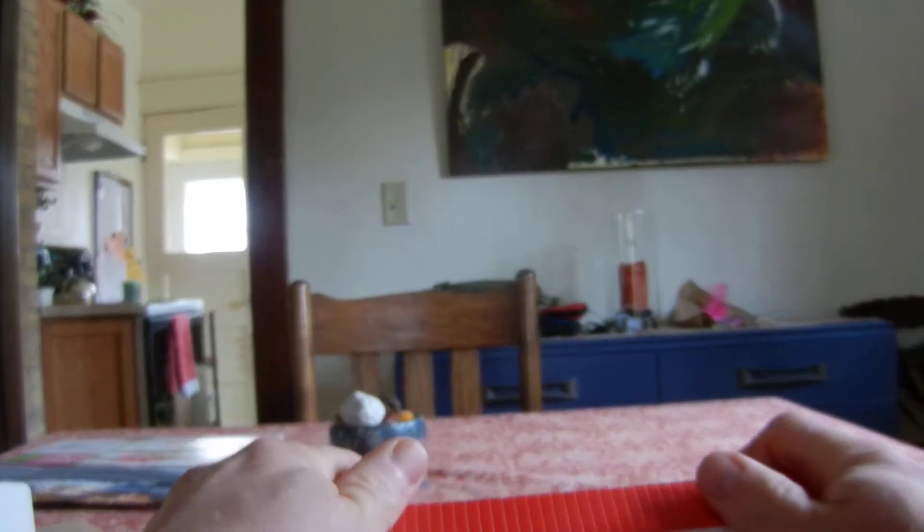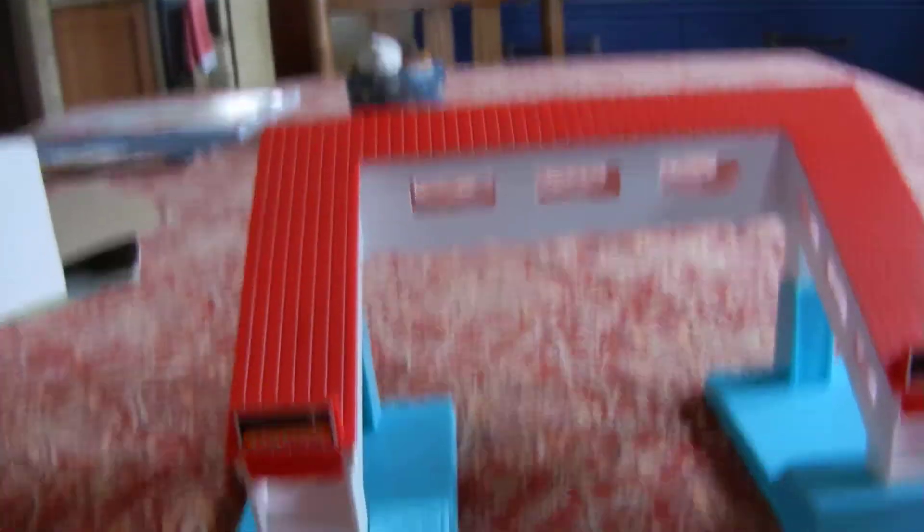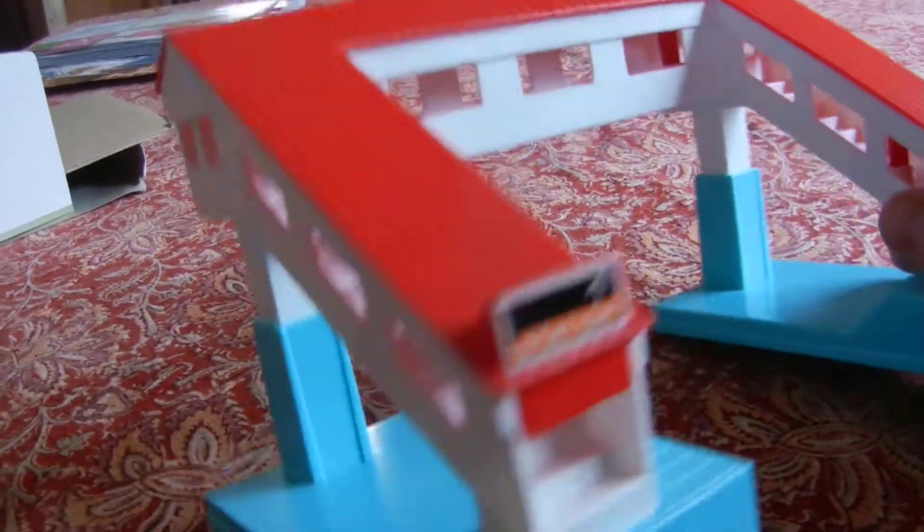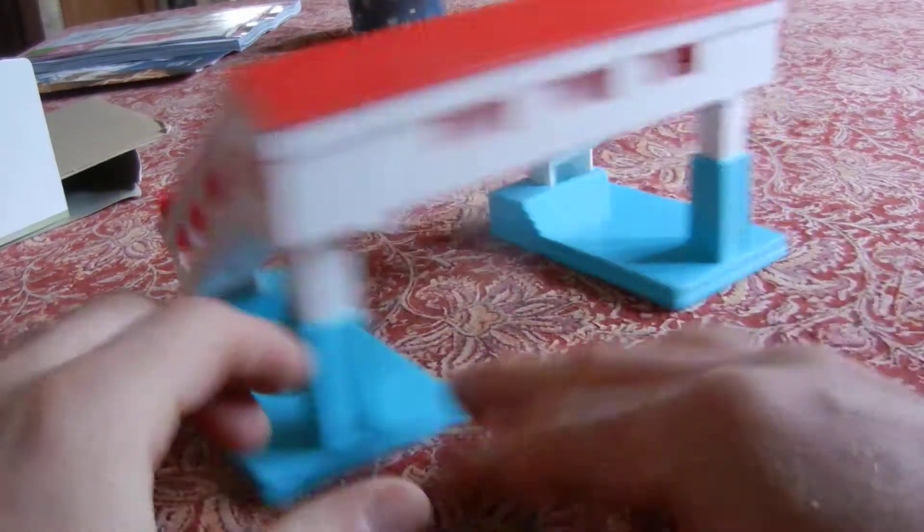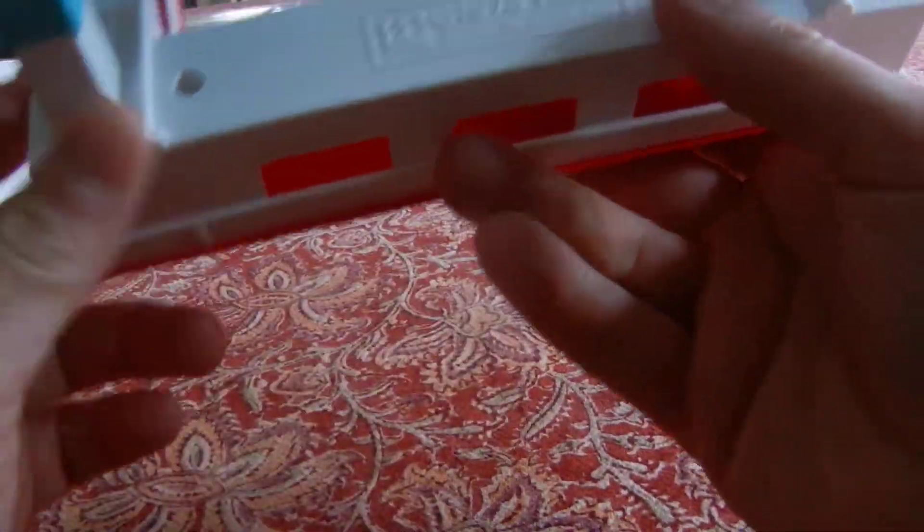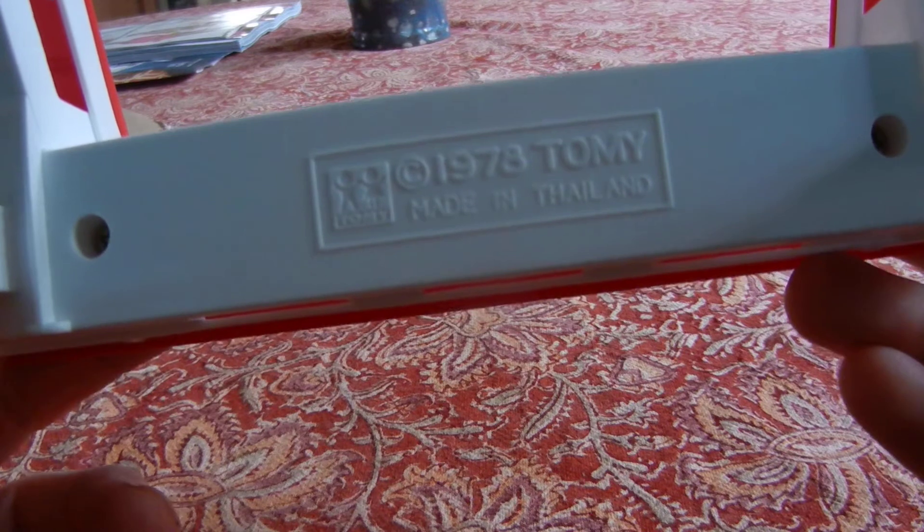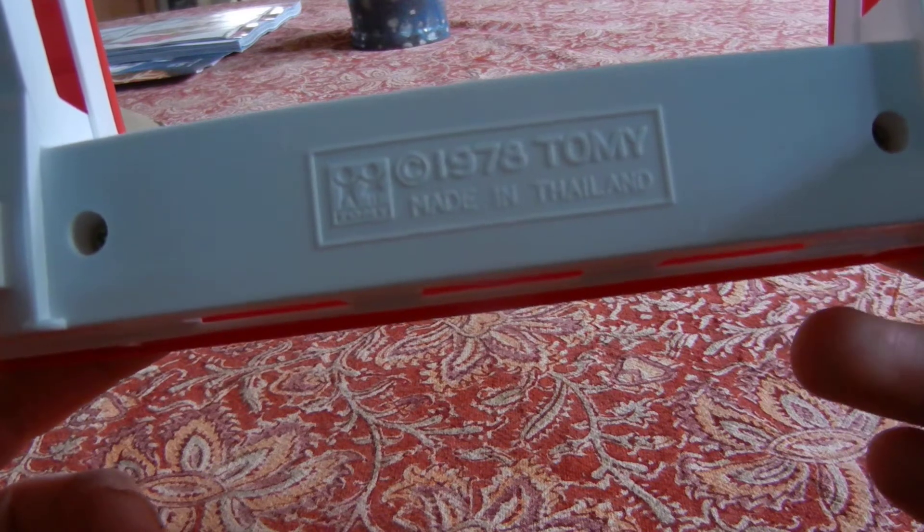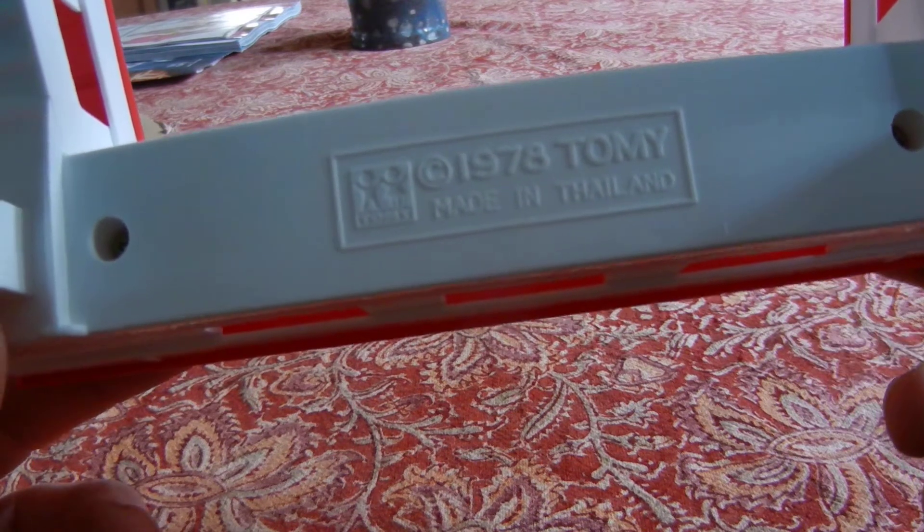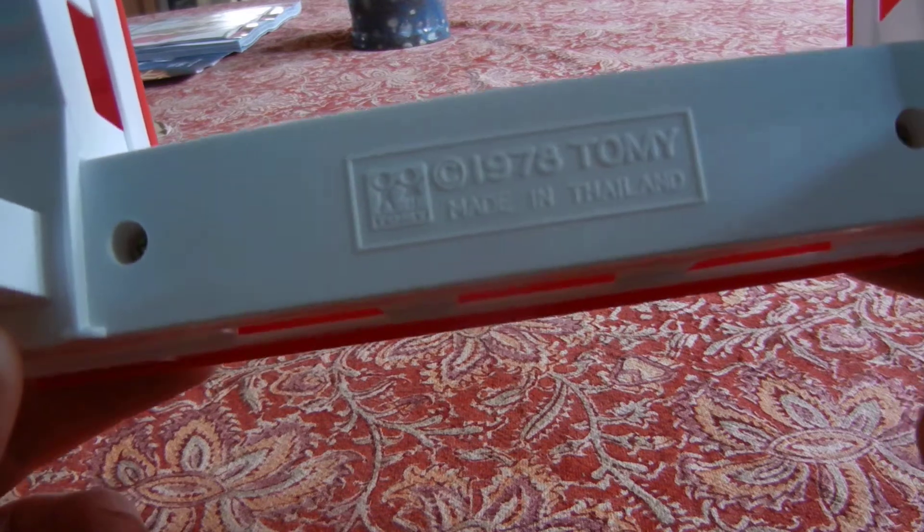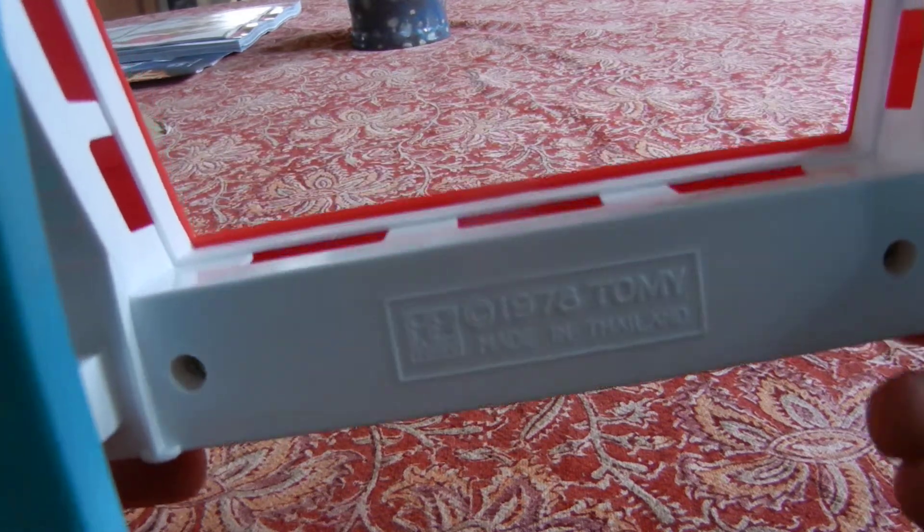You can see how long they've been producing this. This is the old Tomy logo, the very old, older than the red balloon one. This is 1978 Tomy when the mold was actually made.